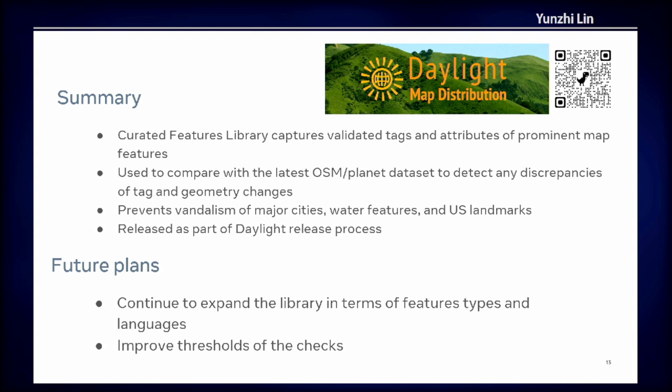In conclusion, the curated feature library captures the valid attributes of permanent map features. It's used to compare the latest OSM file with the library to detect any discrepancy and prevent vandalism of major cities, water bodies, and US landmarks. It is released as part of Meta's map distribution release process.